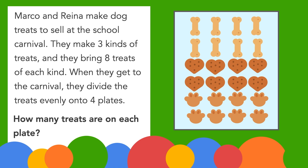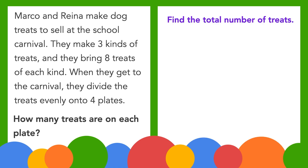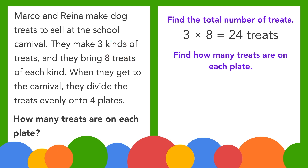To find out how many treats are on each plate, let's break it down step by step. First, let's find the total number of treats they made. We know they made three kinds of treats, and they bring eight treats of each kind. We'll multiply to find the total number of treats. Three times eight equals twenty-four, so they made twenty-four treats.